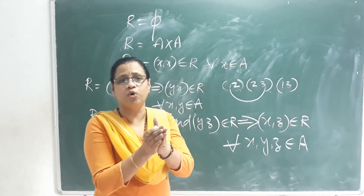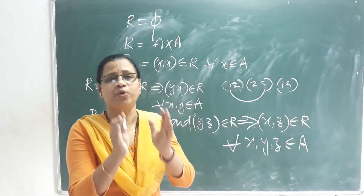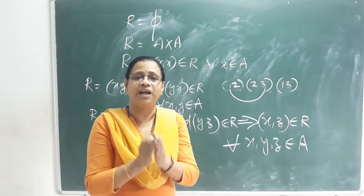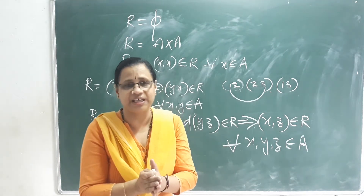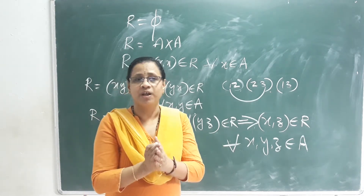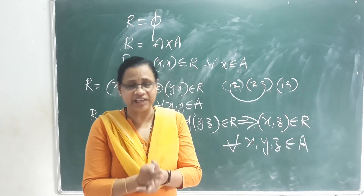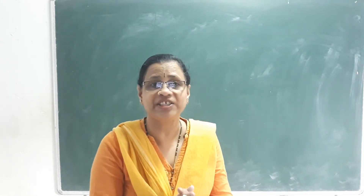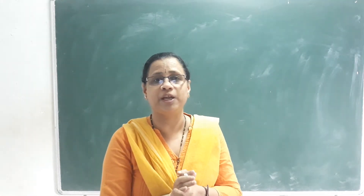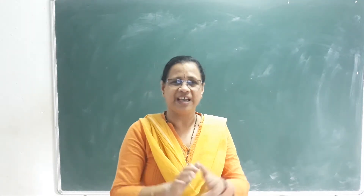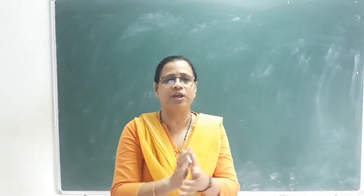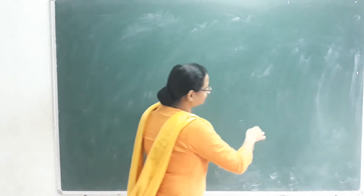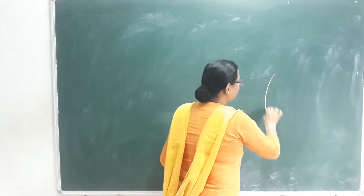When these three relations — reflexive, symmetric, and transitive — are all satisfied by one relation, we call it an Equivalence Relation. If we call a particular relation that satisfies special conditions, we call it a function.